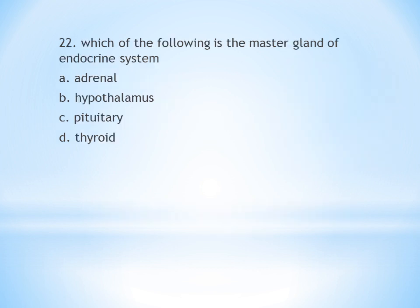Question 22: Which of the following is the master gland of the endocrine system? The master gland of the endocrine system is the pituitary gland.